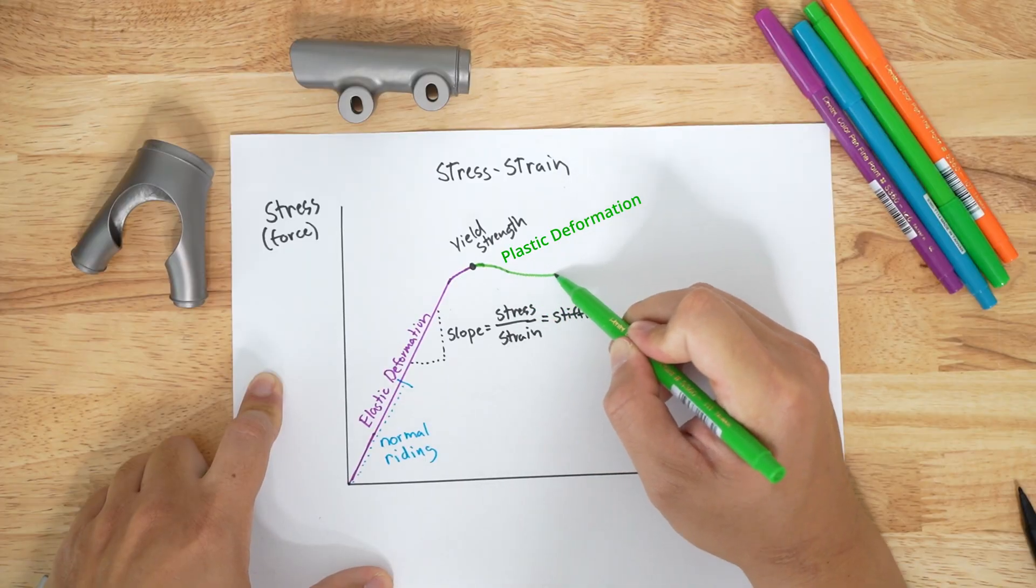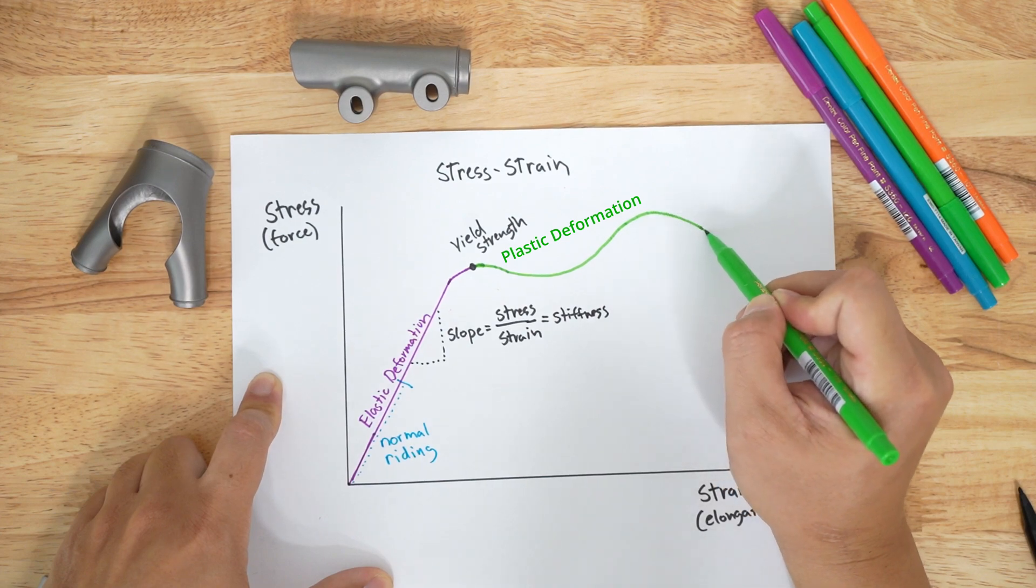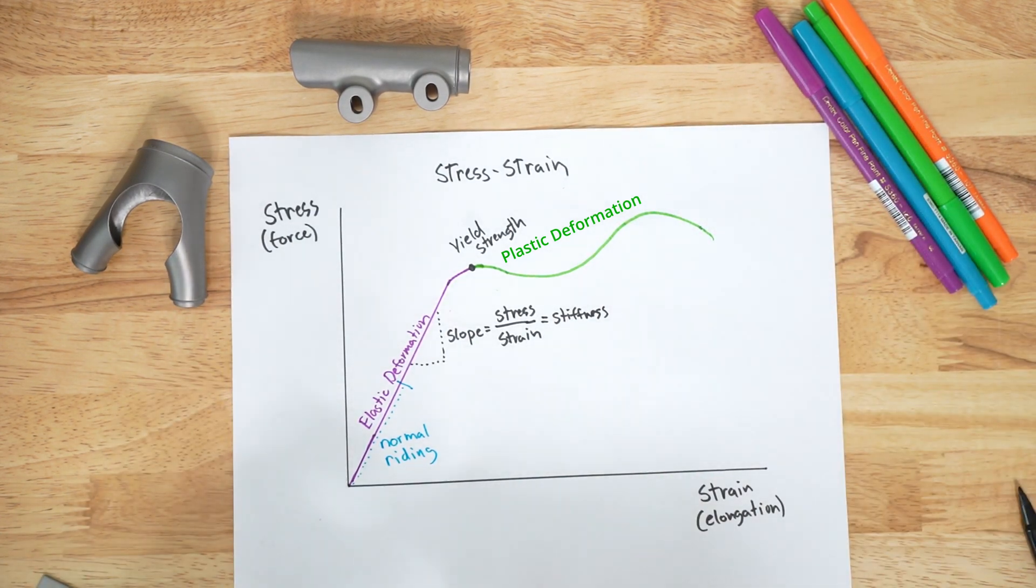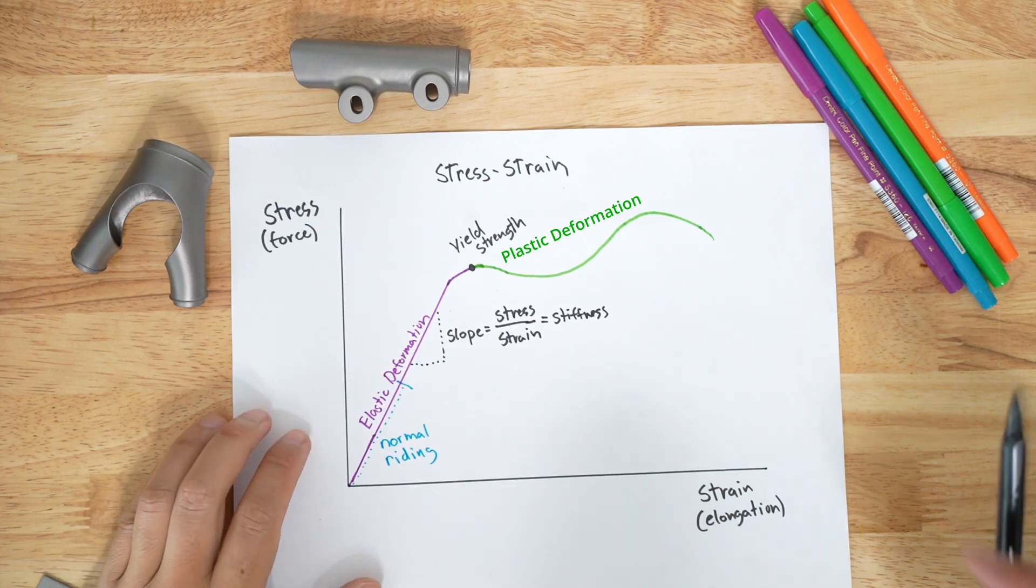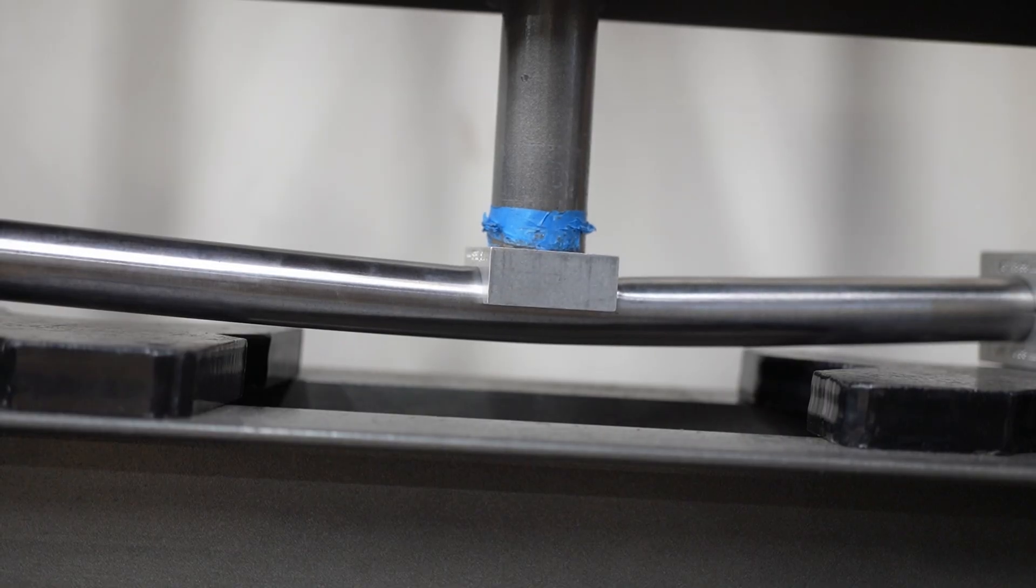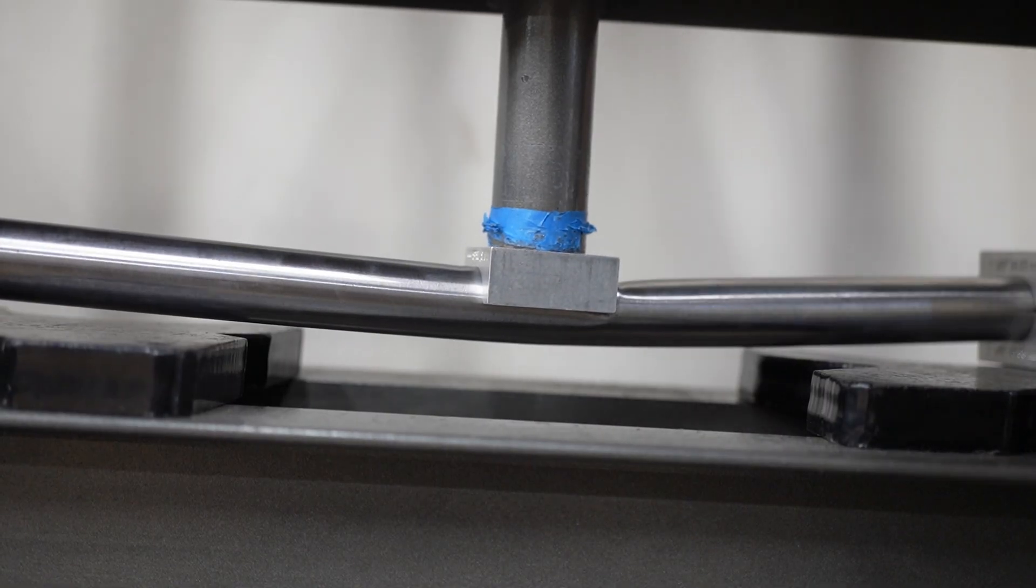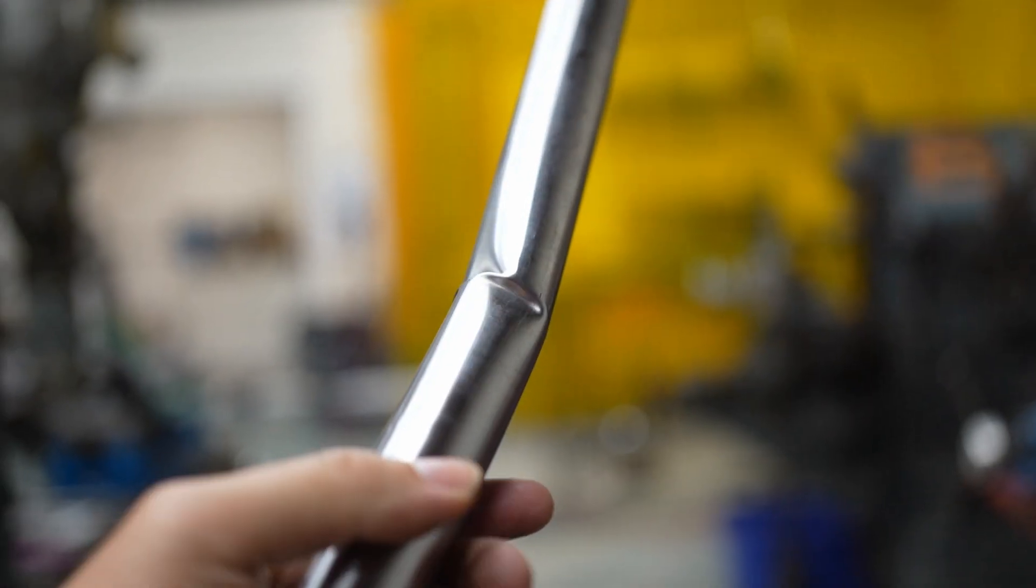In the plastic deformation region, the material is not broken. In fact, it can get stronger in a process known as work hardening. Finally, if you keep pushing the material, it will eventually break. This is known as the ultimate strength.